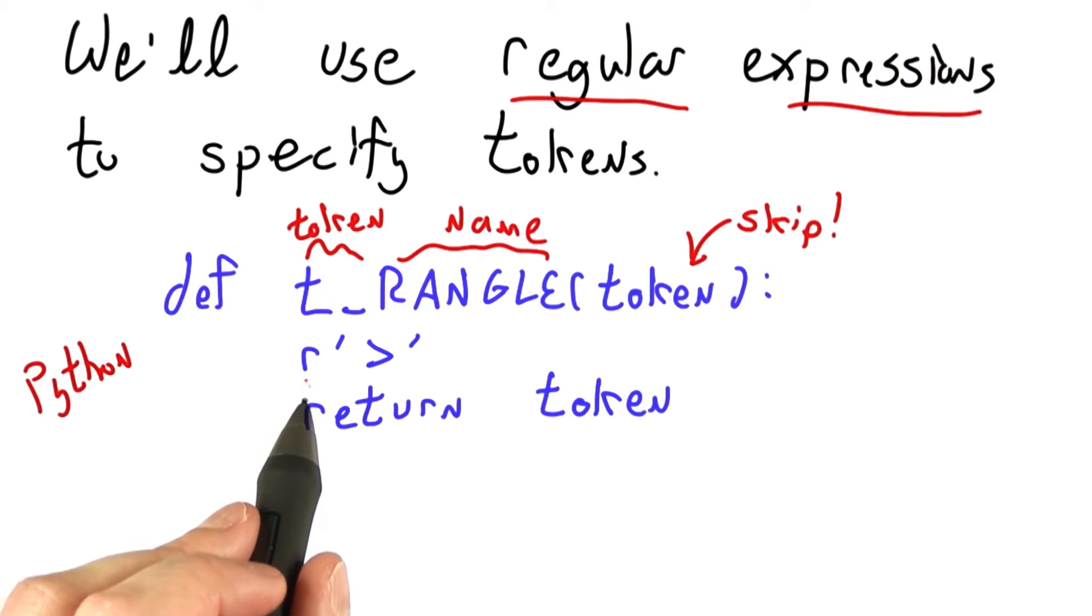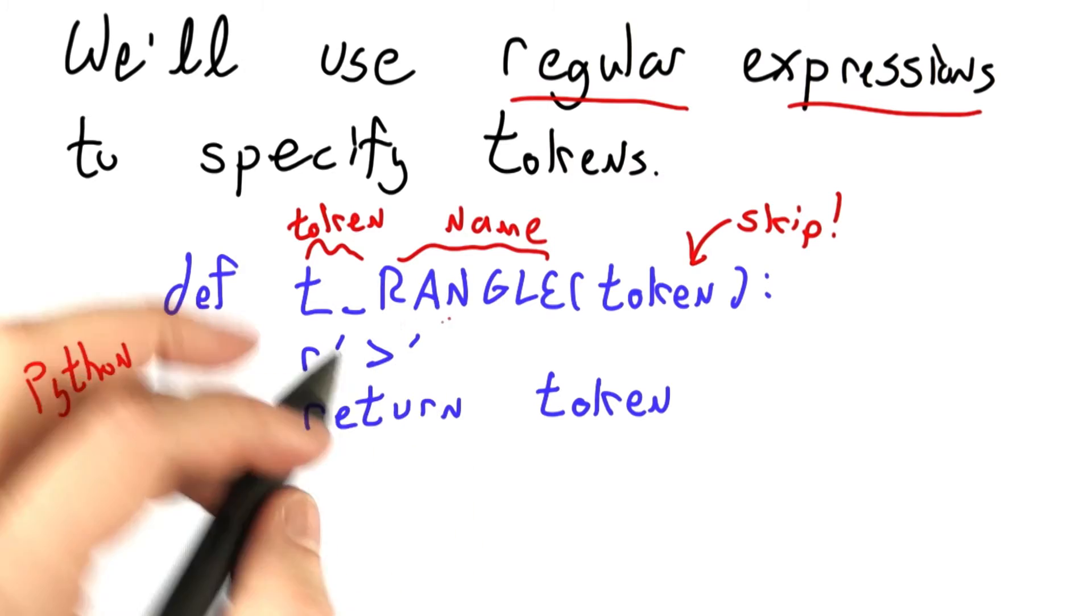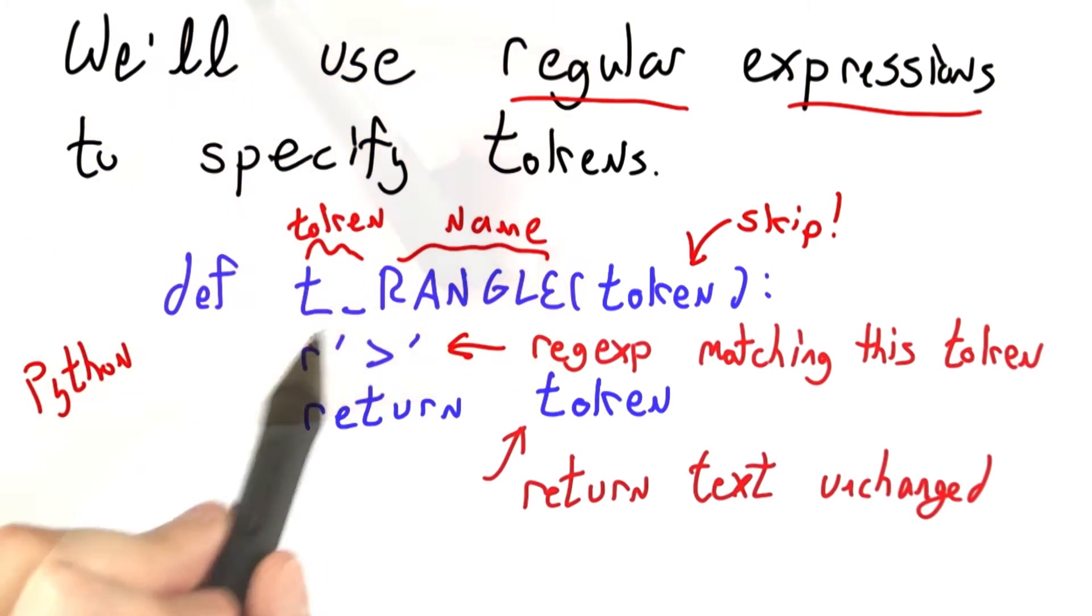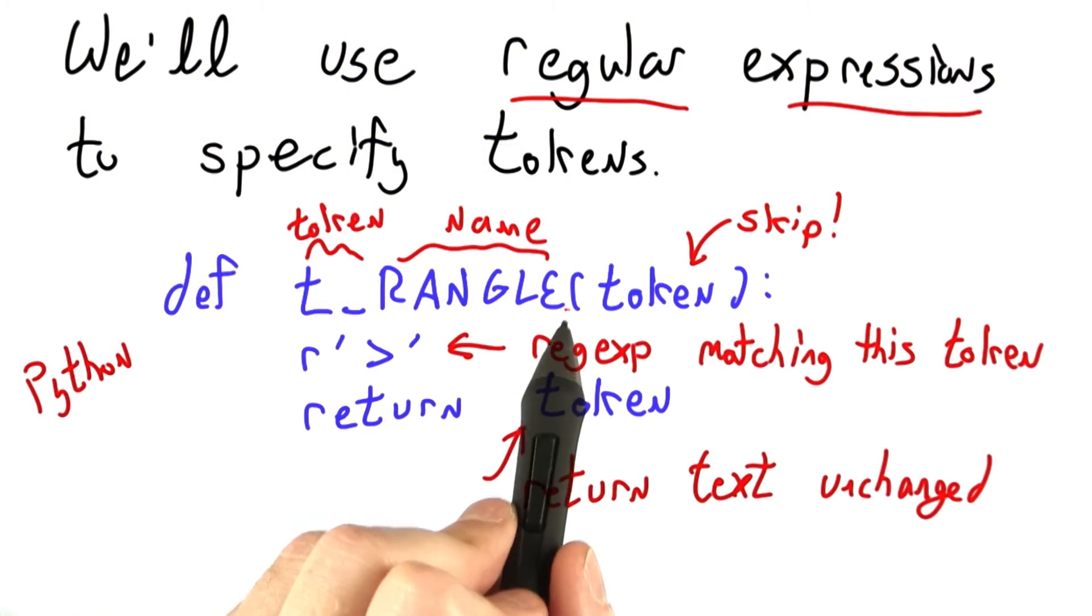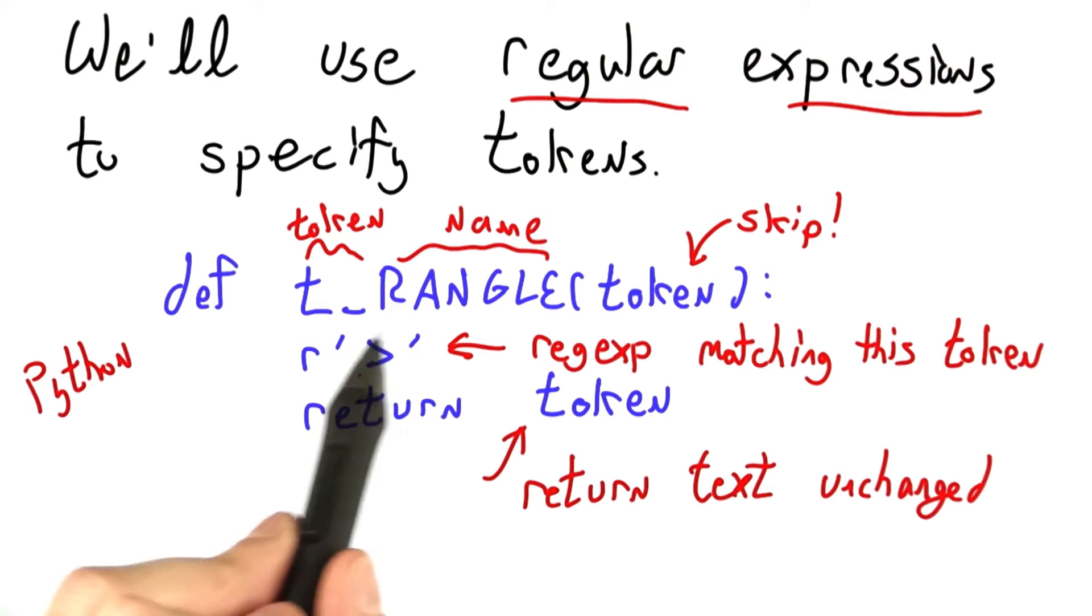Next, we have a regular expression corresponding to this token. Which in this case, for the right angle token, there's really only one string it can correspond to. So we've written out the regular expression that corresponds to a single string.